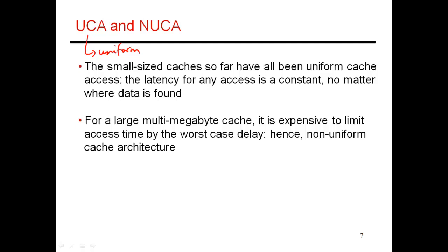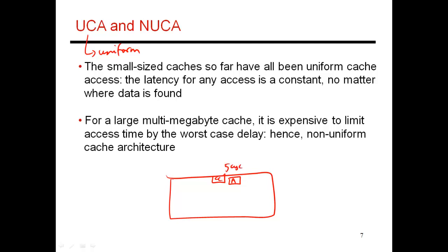But when you have a really large cache with a cache controller, if your data block A happens to be very close to the cache controller, you should be able to service that request in as little as five cycles. But if the data block happens to be really far away, you're traversing longer wires, which may cause a 30-cycle access time. If you allow blocks to have different latencies depending on their distance from the cache controller, that gives you a non-uniform cache access.